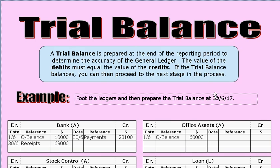The trial balance is a unique part of the double-entry accounting system. It is prepared at the end of the reporting period to determine the accuracy of the general ledger. The value of the debits must equal the value of the credits. If the trial balance balances, you can proceed to the preparation of the accounting reports. If it doesn't balance, you would have to work out why before proceeding. It is a checking mechanism before preparing the accounting reports.